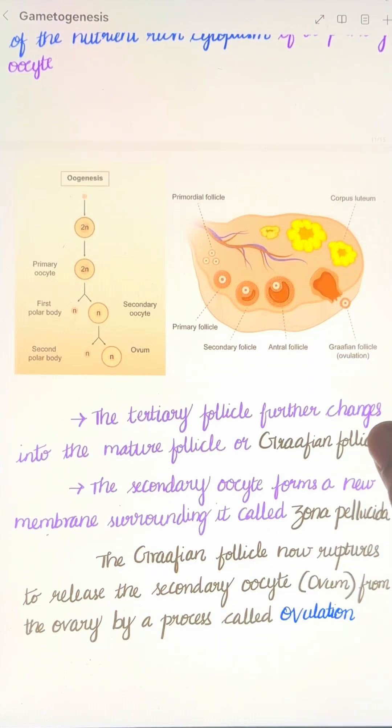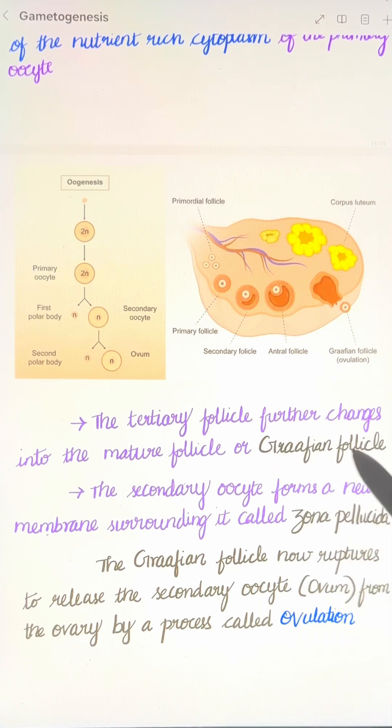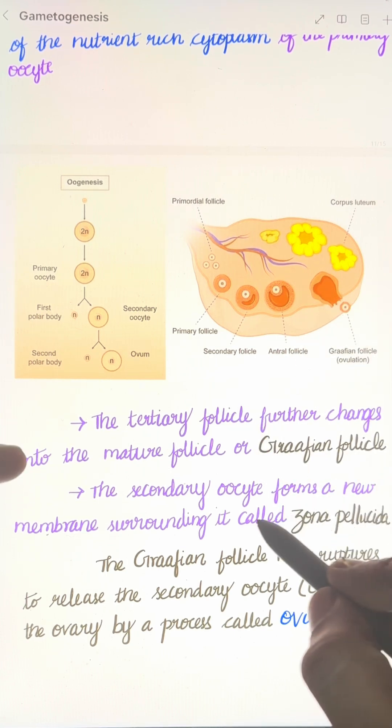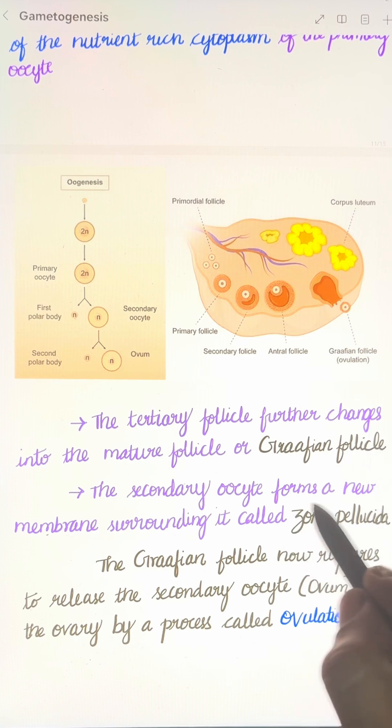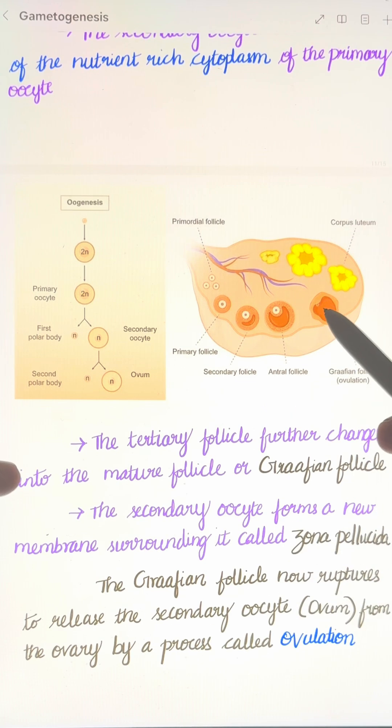The tertiary follicle further matures into a Graafian follicle. The secondary oocyte is surrounded by a new membrane called the zona pellucida. The Graafian follicle then ruptures, and the secondary oocyte is released from the ovary by a process called ovulation.